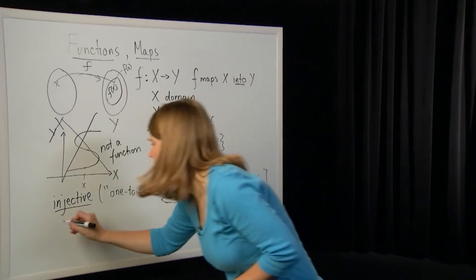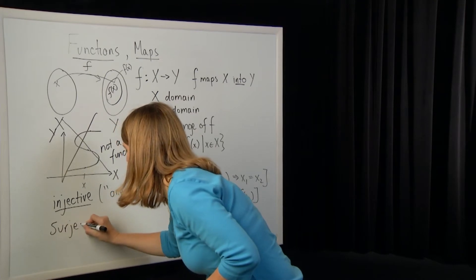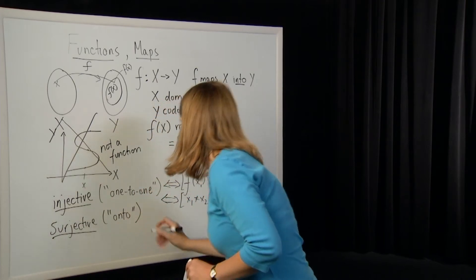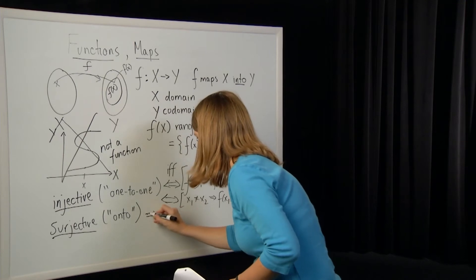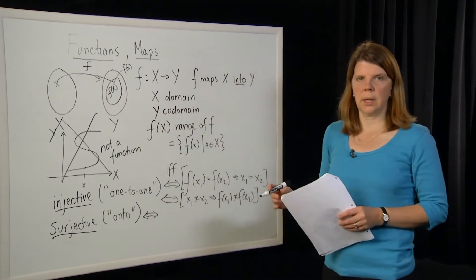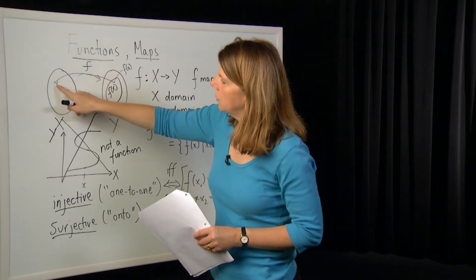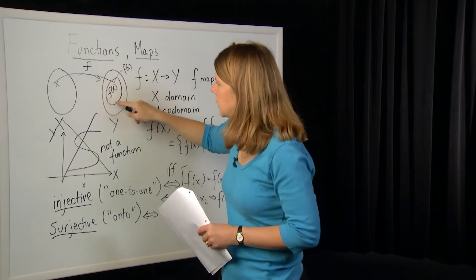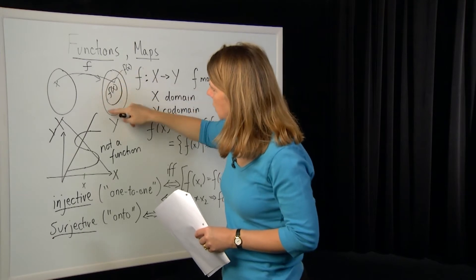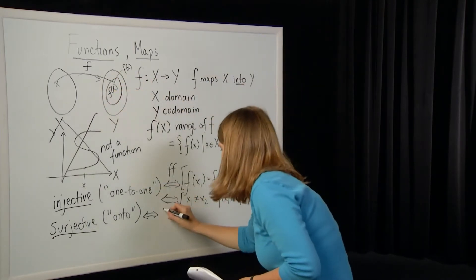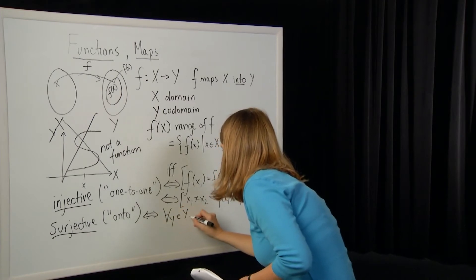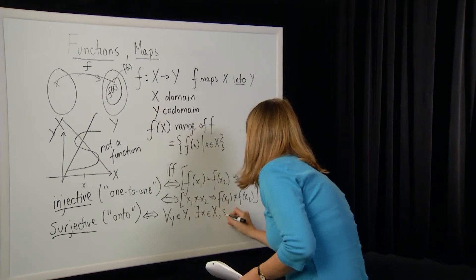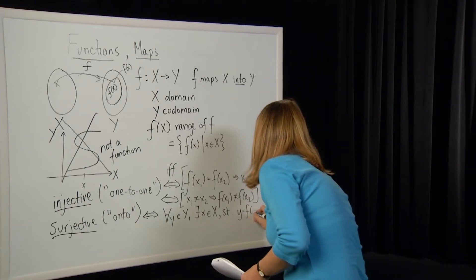Surjectivity: a function is said to be surjective, or onto, if and only if for all elements y in the codomain, there exists an x in the domain such that y is equal to F of x. Basically it means that the range covers the whole codomain.